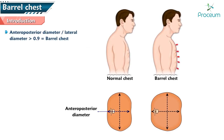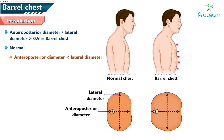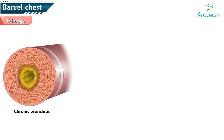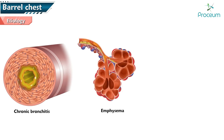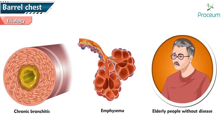A ratio of antero-posterior to lateral chest diameter of greater than 0.9 is termed barrel chest. The normal antero-posterior diameter should be less than the lateral diameter, and the ratio of antero-posterior to lateral should lie between 0.70 and 0.75. Etiology includes chronic bronchitis and emphysema, and it also occurs in elderly people without disease.